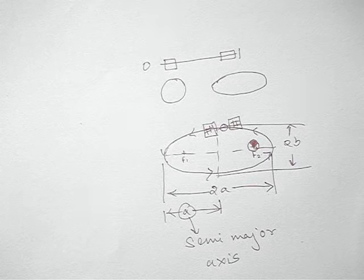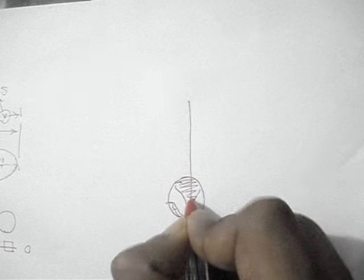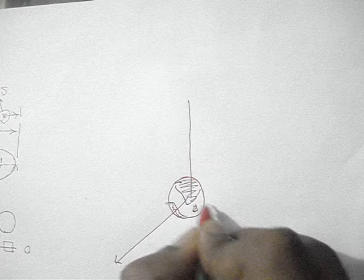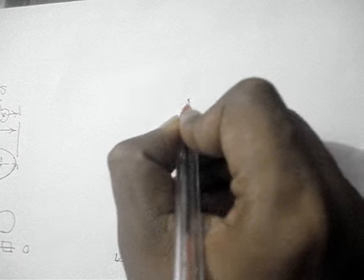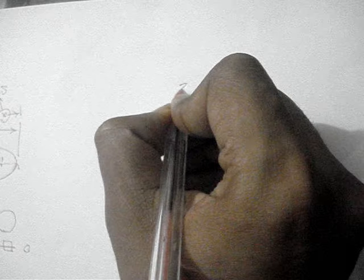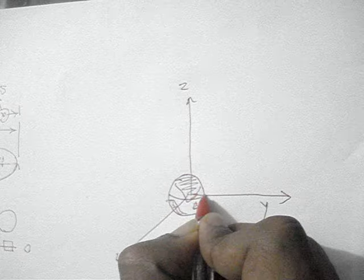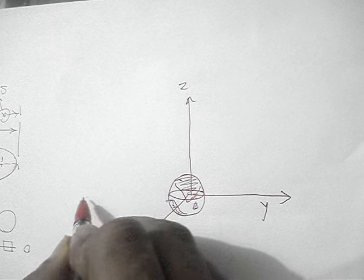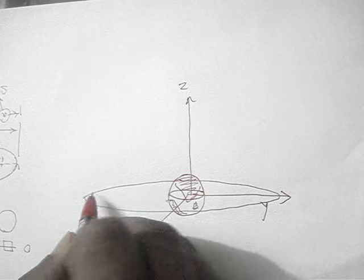Up next, the orbital inclination. So let's assume this is our Earth and this is our ECI frame. This is the x-axis, this is the y-axis, and this is the z-axis. This will be the equator and this will be the equatorial plane.